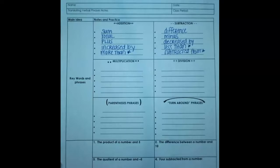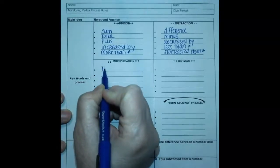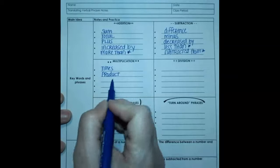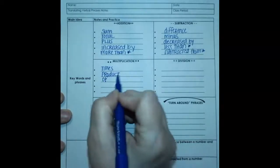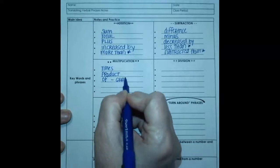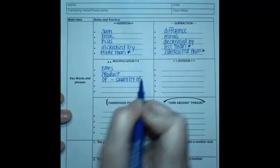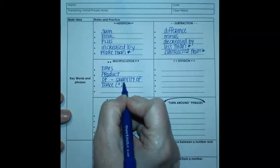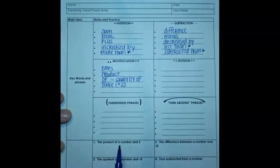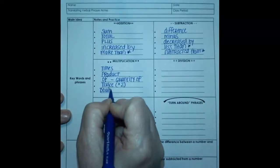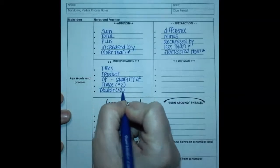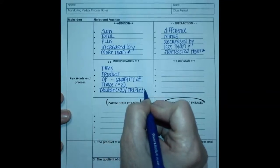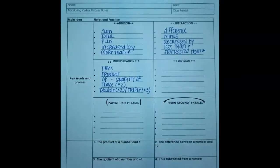How about some multiplication words? We have times, product, of, sometimes they say quantity of. Twice comes around a lot, and what twice means is to multiply by two. Double comes up quite often. Double also means times two. And what I see often enough is triple, which means multiply by three.